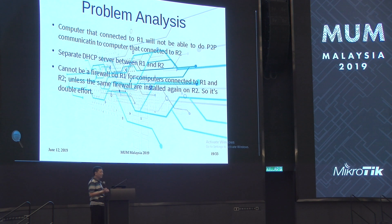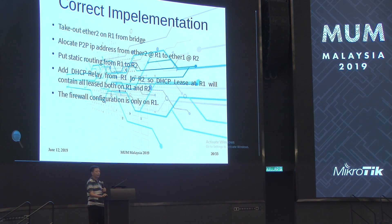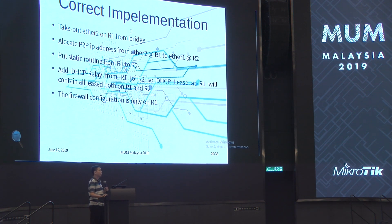Separate DHCP servers between R1 and R2 means you cannot do firewall on R1 for computers connected to both R1 and R2 — unless the same firewall is installed again on R2, which is double effort. Correct implementation: take out the NAT on R1 from bridge, allocate a P2P IP address from the H2 port on R1 to R1 on R2, and put a static route from R1 to R2. Then the DHCP lease list at R1 will contain all leases for both R1 and R2, and firewall configuration is only needed on router 1 — router 2 doesn't need its own firewall anymore.